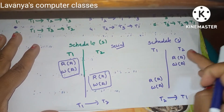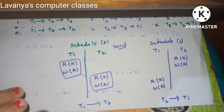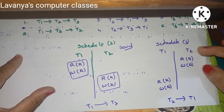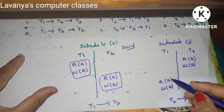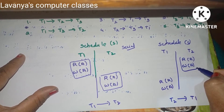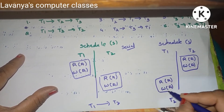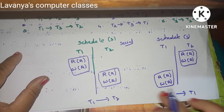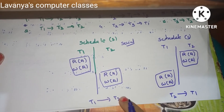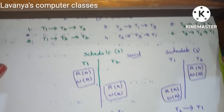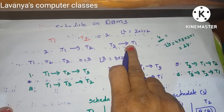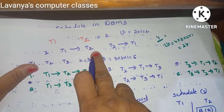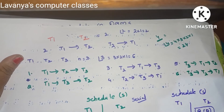A second serial schedule has the same two transactions T1 and T2, but this time T2 is completed first — Read A and Write A — then T1 starts with its Read and Write operations. This is T2 followed by T1. So for two transactions, there are factorial 2 = 2 possible serial schedules: T1→T2 or T2→T1.